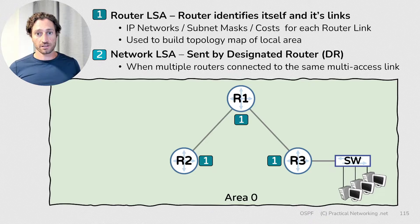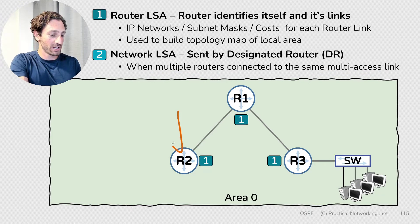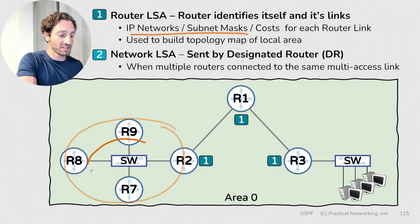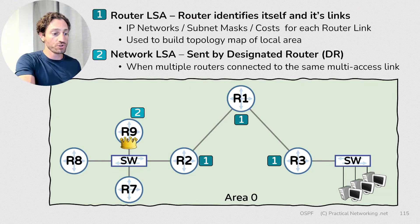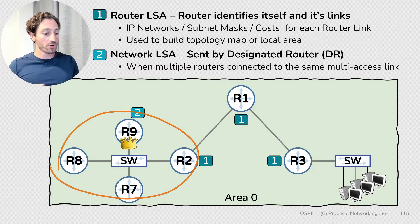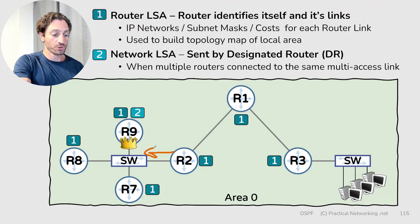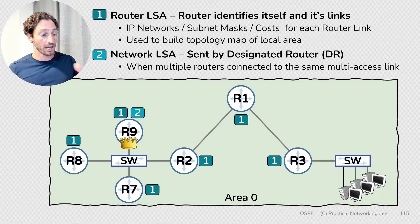What about Type 2 LSAs? Type 2 LSAs are only going to be sent when multiple routers are connected to the same multi-access link. So if we connect Router 2 to a multi-access link, instead of all of those routers sharing the same IP address and subnet mask information about that link, all those routers will elect a designated router. That designated router will send out a single Type 2 LSA which includes the information related to this multi-access segment. All of the other routers will also send out a single Type 1 LSA indicating that they are connected to a multi-access segment, with the IP address information of that segment included in the DR's Type 2 LSA.